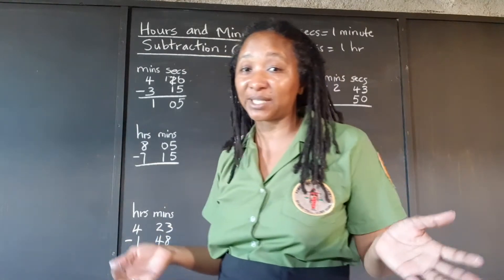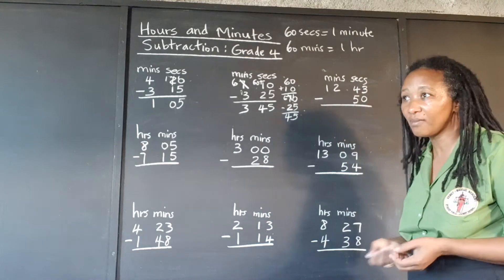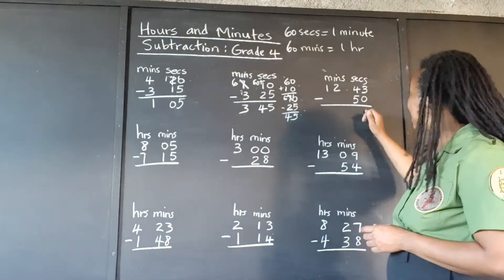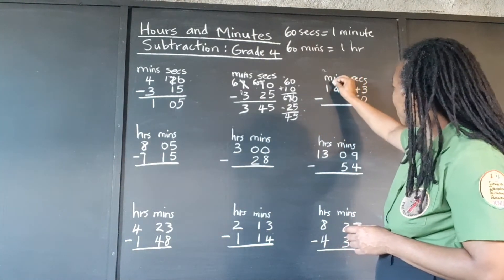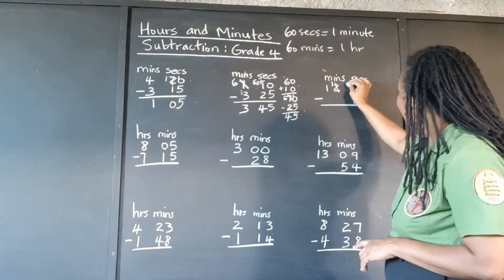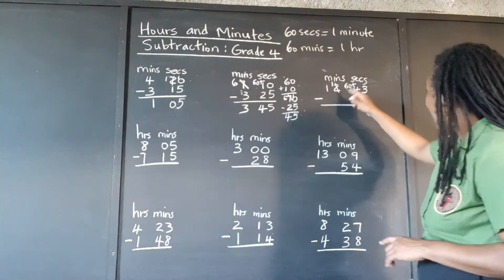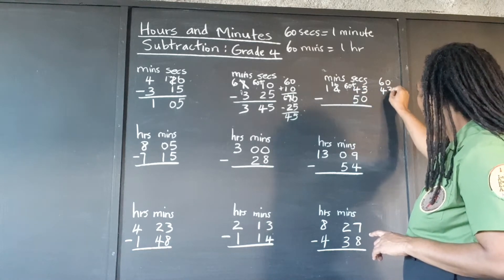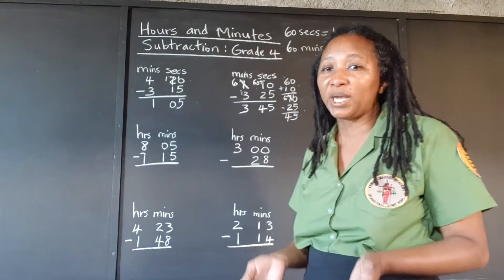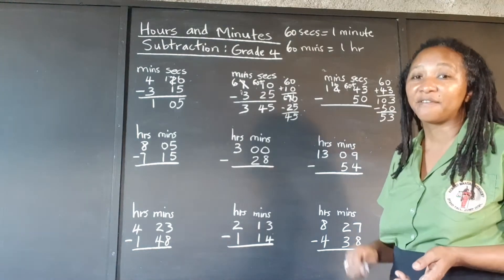Do you get the hang of it or do you need more practice? Let's do some more. Here we are asked to take 50 seconds from 43 seconds — that's going to be a tough one. We don't have enough at the top; we only have 43 and we need to take out 50. So we're going to take 1 minute from the 2, leaving 1. The 1 minute that we took, we're going to carry it over to the seconds as 60. We add up the 60 and the 43 seconds already there — that's 103. We can definitely take out the 50 out of the 103, and we're left with 53 seconds.